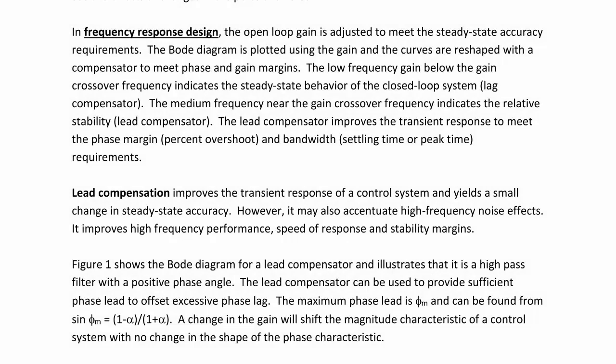Figure 1 shows the Bode diagram for a lead compensator and illustrates that it is a high-pass filter with a positive phase angle. The lead compensator can be used to provide sufficient phase lead to offset excessive phase lag. The maximum phase lead is φ_m and can be found from sin(φ_m) = (1 - α) / (1 + α). A change in the gain will shift the magnitude characteristics of a control system with no change in the shape of the phase characteristic.